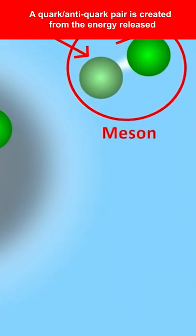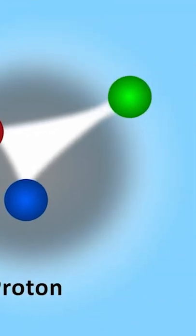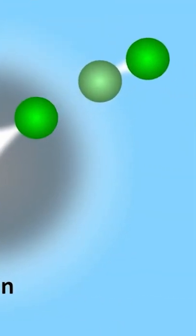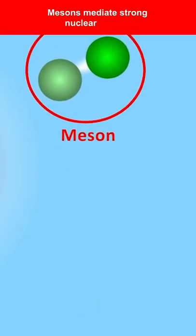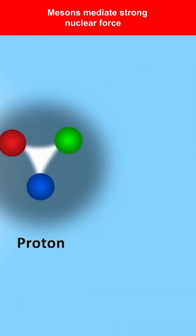This quark-antiquark pair is called a meson. These virtual meson interactions are what keep protons and neutrons bound together in atoms. It is a kind of residual force of the strong force, and it's called the strong nuclear force.